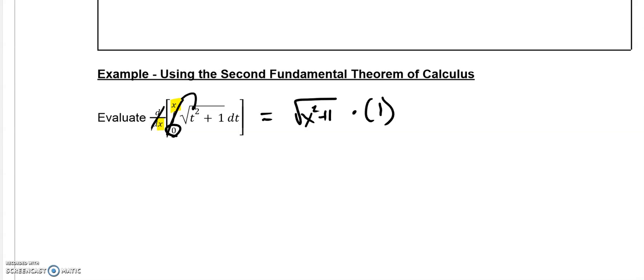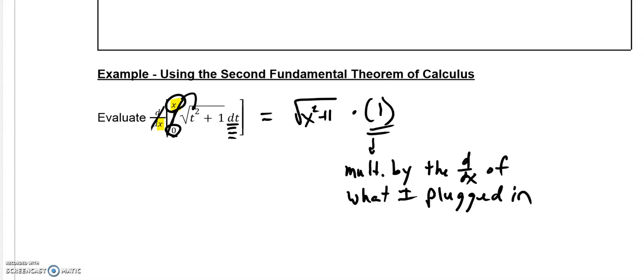Here, this part's tricky. I have to take that times 1, because we changed that variable. Now, listen carefully. This right here, I multiply by the derivative of what I plugged in. So since my upper limit was x, that would be times the derivative of x, which is just 1. Then minus, when I plug in 0, 0 squared plus 1, times the derivative of what I plugged in, and I plugged in 0, well, the derivative of 0 is 0. And so, that's why it's times 0.